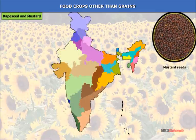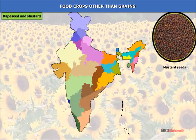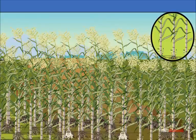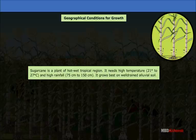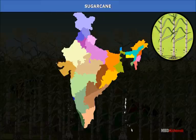Rapeseed and mustard are important edible oils used for preparing pickles, curries and vegetables, and are also an important cattle feed. These are winter Rabi crops; Uttar Pradesh, Rajasthan and Punjab are their main producers. Sugarcane is also known as a cash crop because it is grown by farmers for selling it in the market. India is considered to be the original home of sugarcane. Sugarcane is a plant of hot, wet tropical regions and needs high temperature of 21°C to 27°C, and high rainfall of 75 cm to 150 cm. It grows best on well-drained alluvial soil. Uttar Pradesh, Punjab, Haryana and Bihar are states producing sugarcane in northern India.